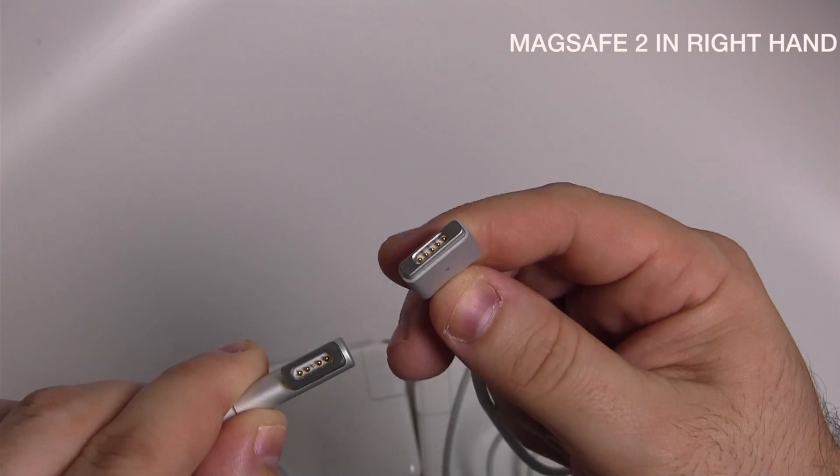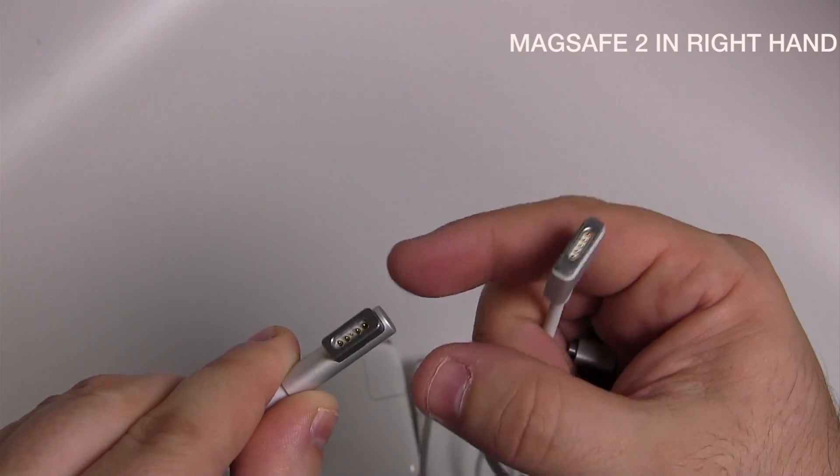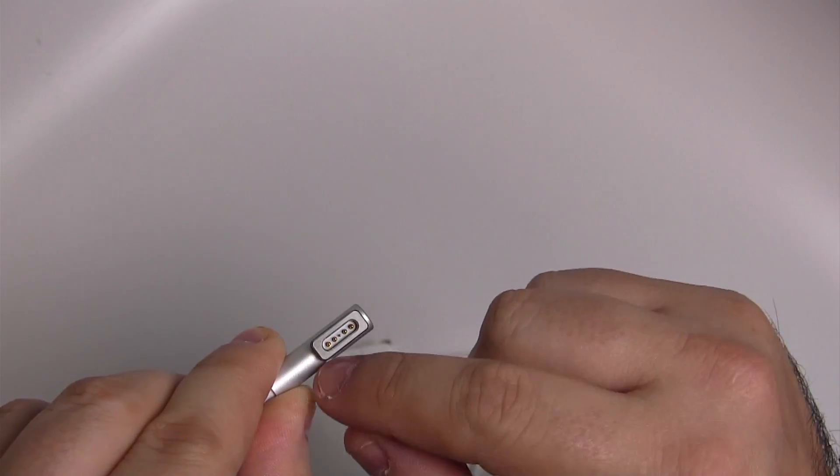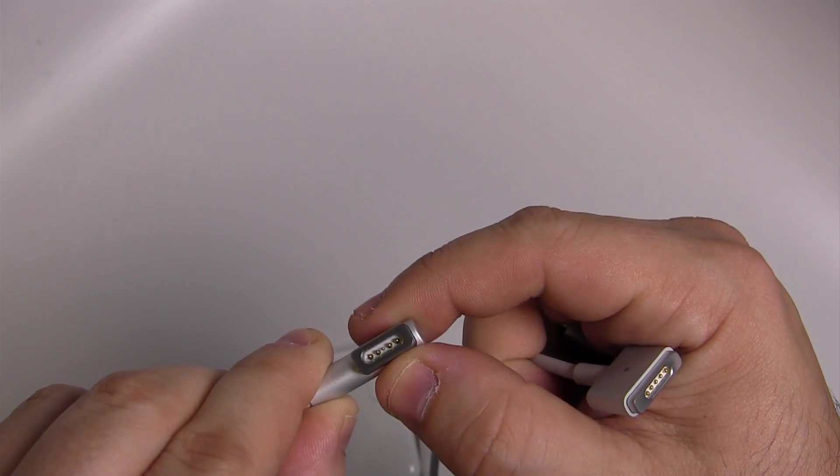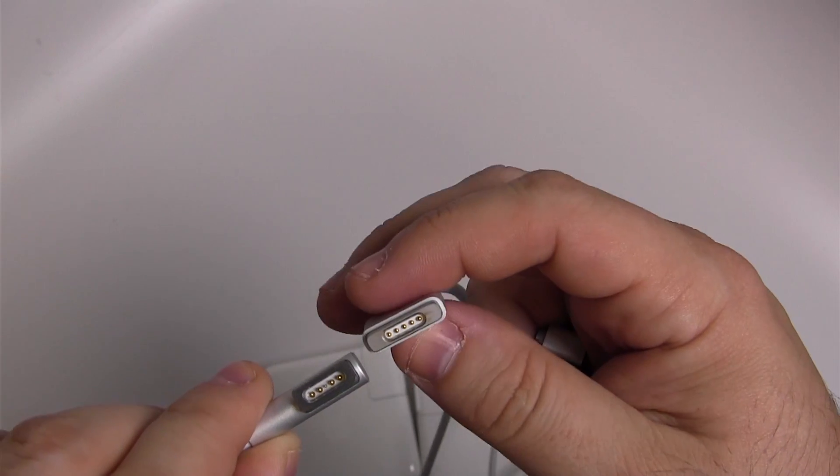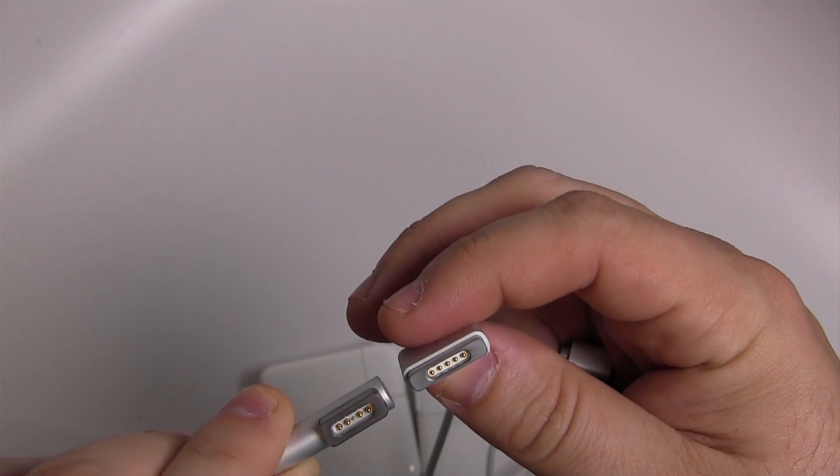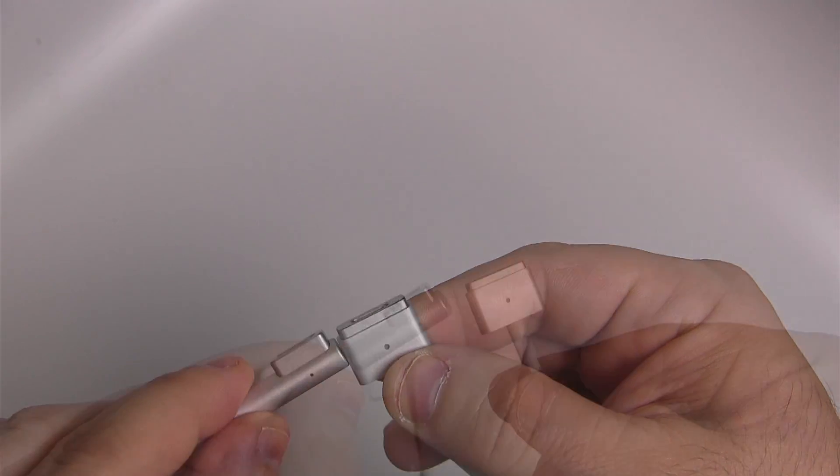They had to make the MagSafe 2 because the new version of the Apple laptops were so thin that the MagSafe was too thick to be able to insert into the housing. So the MagSafe 2 is slightly thinner, but wider at the same time.